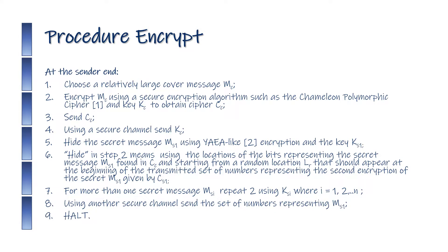Procedure Encrypt — At the sender end: (1) Choose a relatively large cover message MC. (2) Encrypt MC using a secure encryption algorithm such as the Chameleon Polymorphic Cipher and key KC to obtain ciphertext CC. (3) Send CC using a secure channel; send KC.